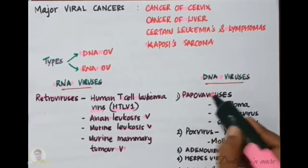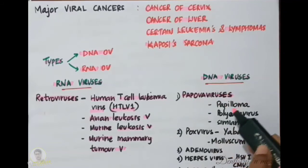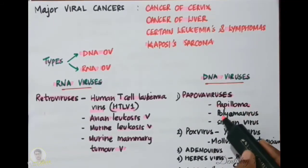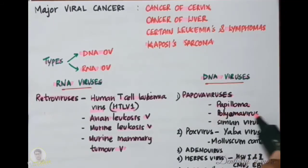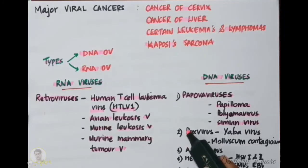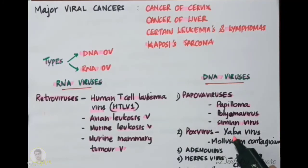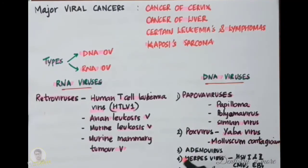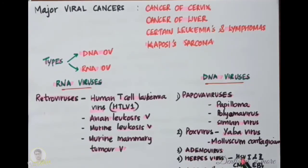DNA oncogenic viruses include papovavirus — human papillomavirus, polyomavirus, simian virus — poxvirus such as Yaba virus and molluscum contagiosum, adenovirus, herpesvirus, and hepatitis B and C.